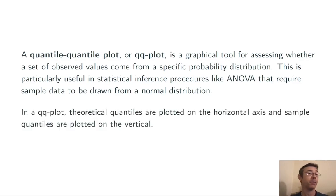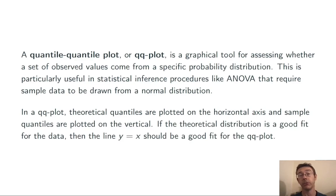In a QQ plot, we put theoretical quantiles on the horizontal axis and sample quantiles on the vertical. If the probability distribution that we're looking at is a good fit for the data, then those points that we're plotting should lie more or less along the line y equals x.